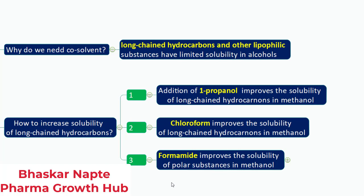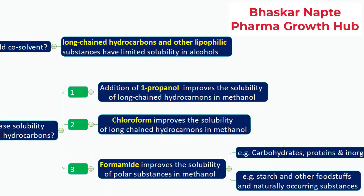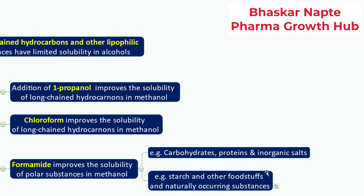The third important co-solvent to consider is formamide. Like 1-propanol or chloroform, formamide also helps in solubilizing substances in the presence of methanol. Examples of compounds where formamide is useful include carbohydrates, proteins, inorganic salts — which will also get solubilized in the presence of formamide — starch, and other foodstuffs and naturally occurring substances. For this kind of sample, you can always consider formamide.